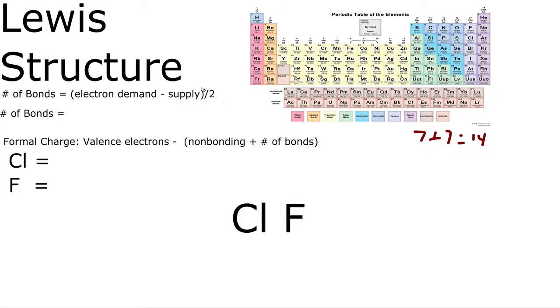This will be our supply in the formula to figure out how many bonds we need to make in this molecule. The demand would be to satisfy the octet rule on both atoms, so 8 plus 8 is 16. So 16 minus 14 is 2, divide that by 2, and we figure out our total bonds will be 1.